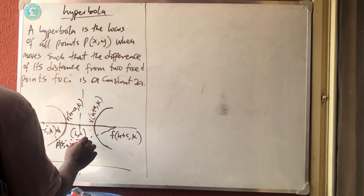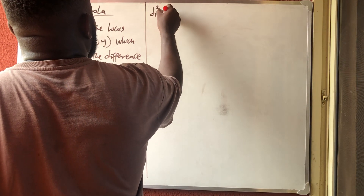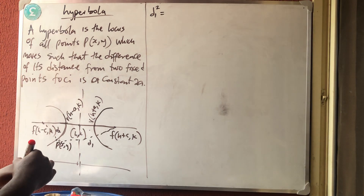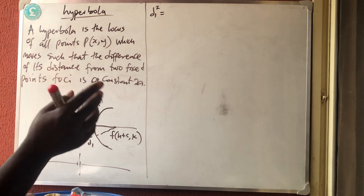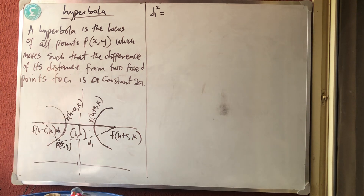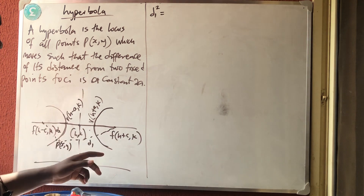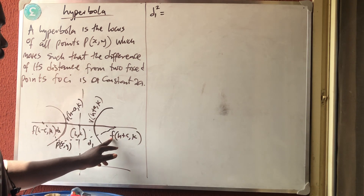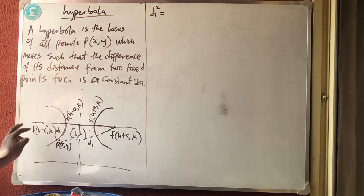Let me call these D2 and D1. The center, focus, and vertex of an ellipse are the same concepts for hyperbola. The foci contain C: the right focus is F(H + C, K) and the left focus is F(H − C, K).